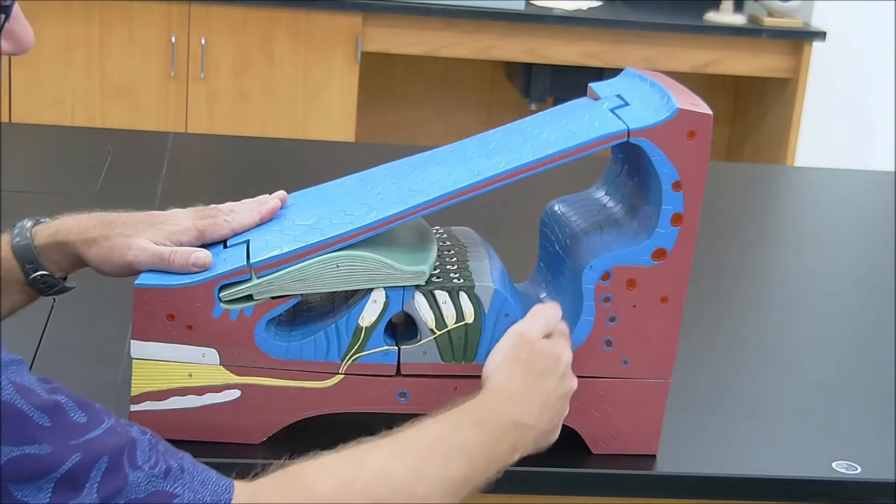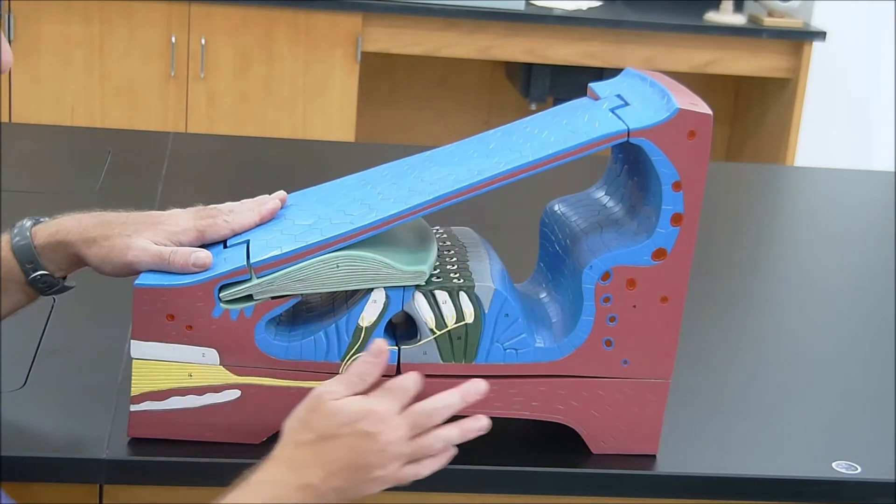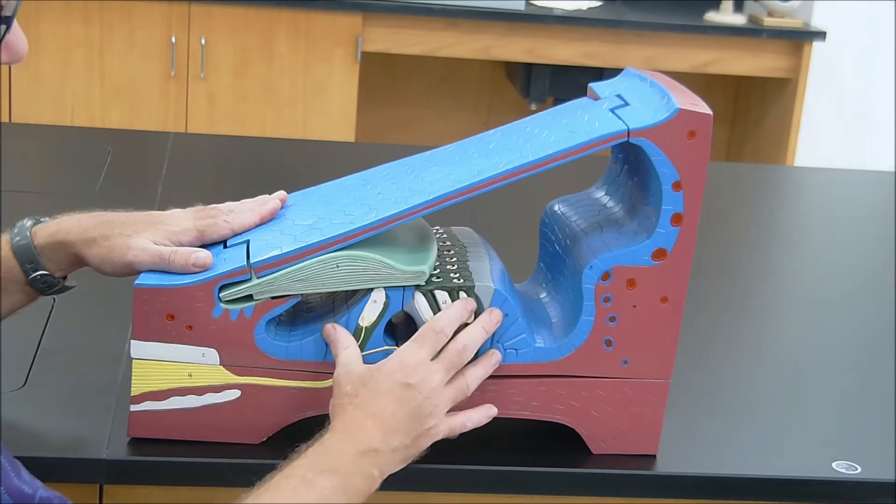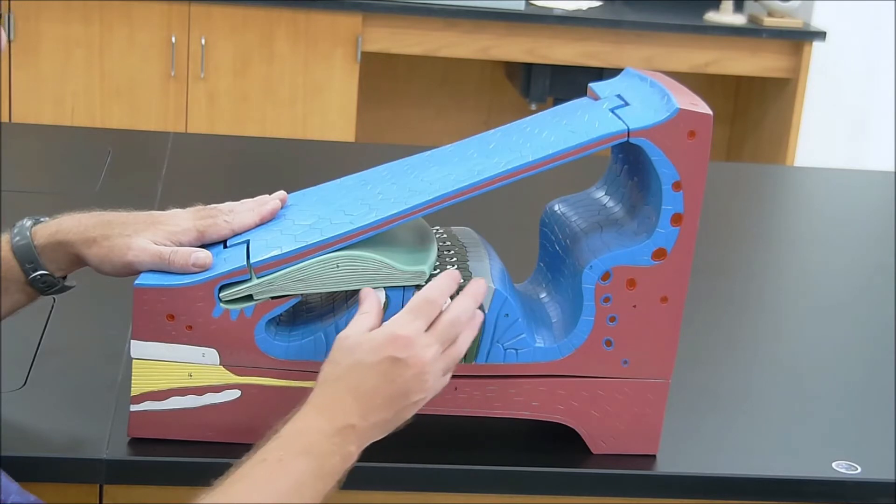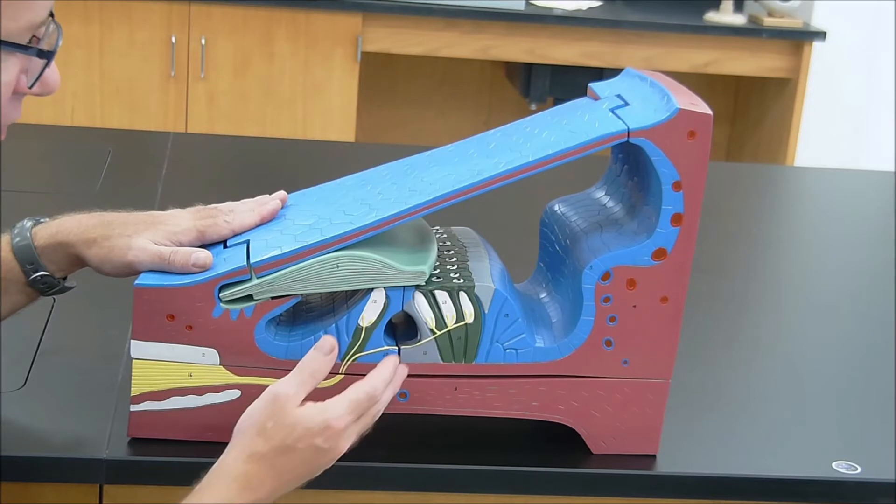Next, below that is the scala media, otherwise known as the cochlear duct, and this is where the organ of Corti resides. And again, the organ of Corti consists of these hair cells that are going to be helpful in transducing sound waves into eventual nerve impulses.